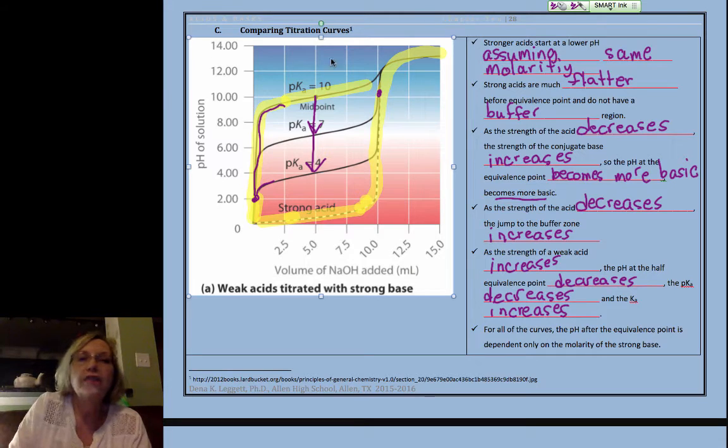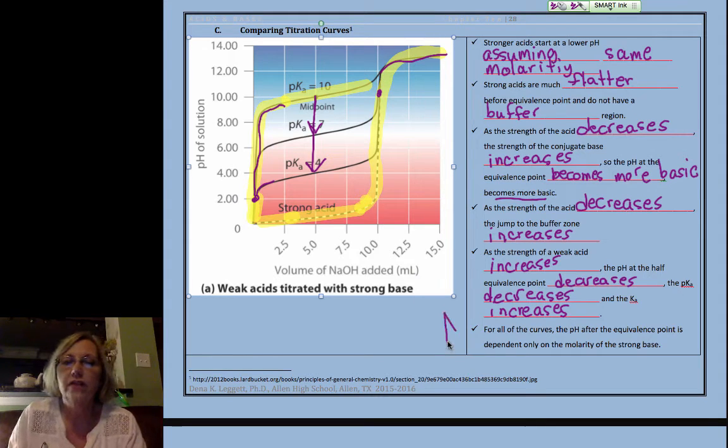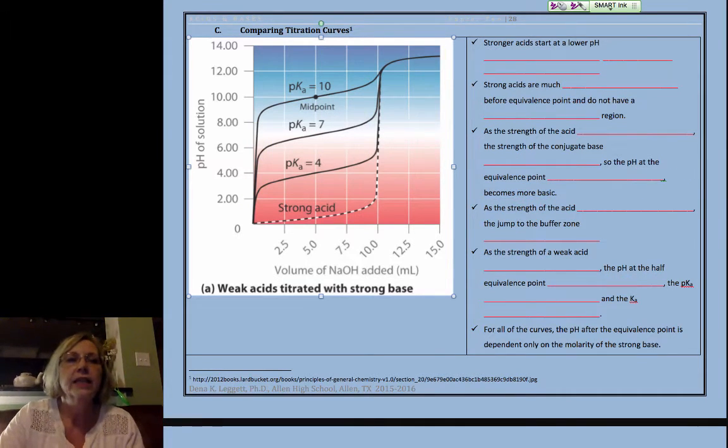For all of them, do you notice that all of these ended at the same pH? And that's because for all of the curves, the pH after the equivalence point depends only on the molarity of the excess strong base.